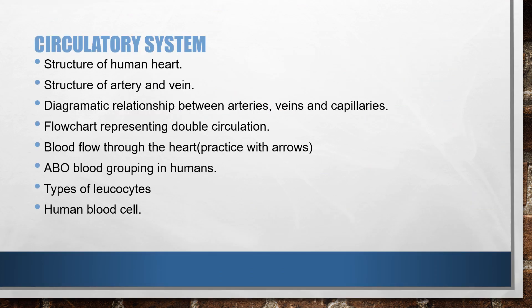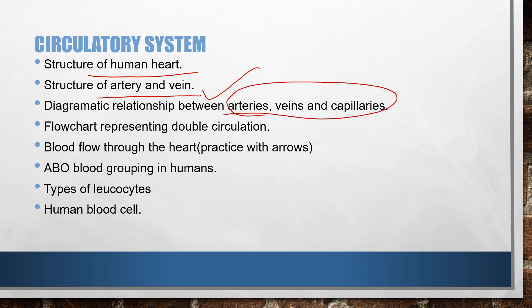First in human anatomy and physiology comes the circulatory system. The structure of the human heart is very important. Then comes the structure of artery and vein, and then the diagrammatic relationship between arteries, veins, and capillaries. I have already covered this when I taught the circulatory system, and I can give it again — it is very important to know.